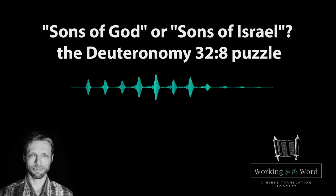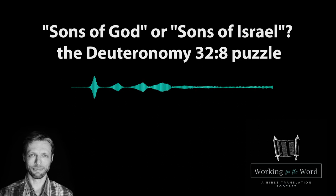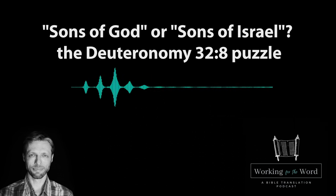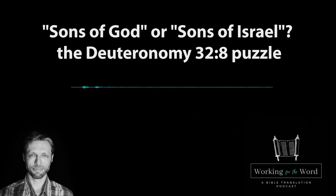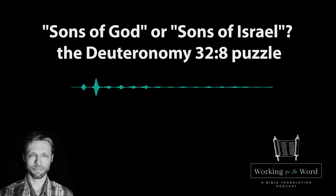Like Judges 5 — we've talked about that before in past podcasts. We've also got Deuteronomy 32, which we're talking about today, Genesis 49 (Jacob's blessing), Exodus 15, and then some Psalms scattered in there. All that to say, the chapter we're going to be talking about is archaic Hebrew, and on top of that it's poetry — so that means it's hard. I think it would be good to start off reading some of the wider context of Deuteronomy 32.